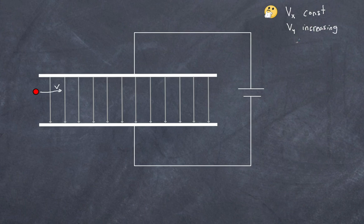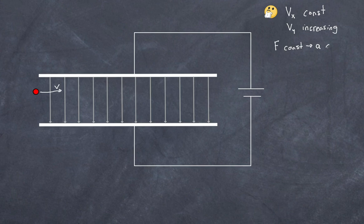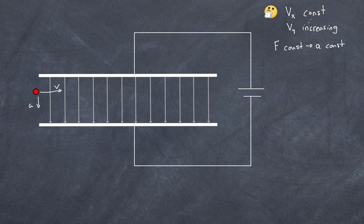Why is the vertical velocity increasing at a constant rate? Because the force is constant, giving a constant acceleration. For a positive charge, that acceleration is in the downward direction. We have two perpendicular motions: constant acceleration vertically and no acceleration horizontally. That, of course, is projectile motion — the particle will curve in a parabola.